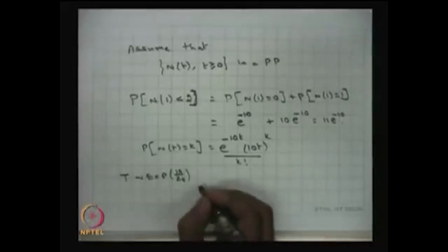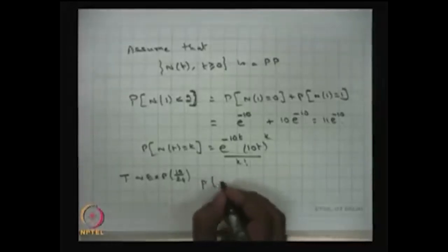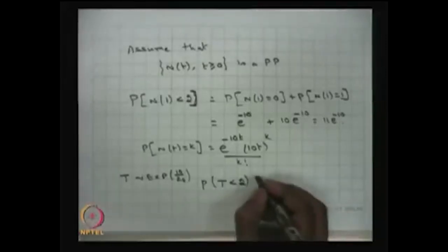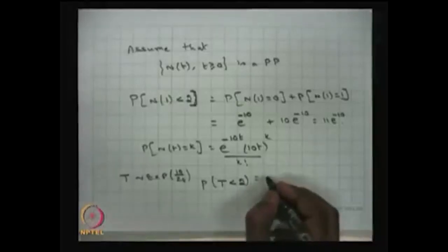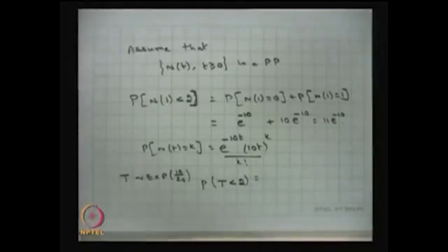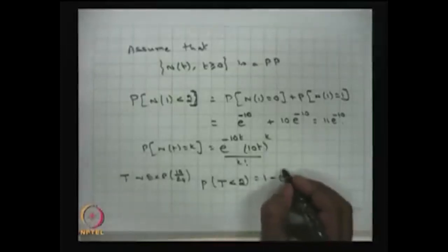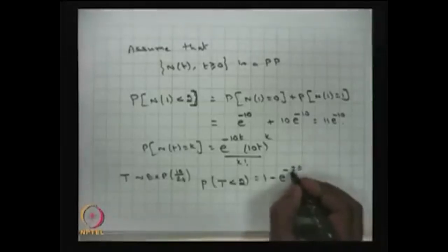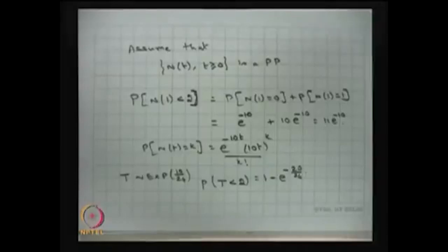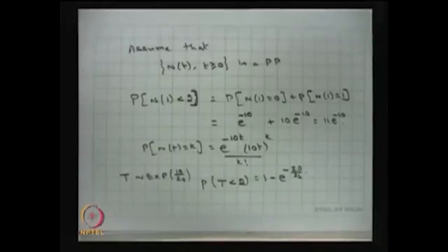The question is P(T < 2), where T is exponential with parameter 10/24. Using the CDF of the exponential distribution, P(T < 2) = 1 - e^{-(10/24)*2} = 1 - e^{-20/24}. This is the probability that the next reported claim will occur within 2 hours.